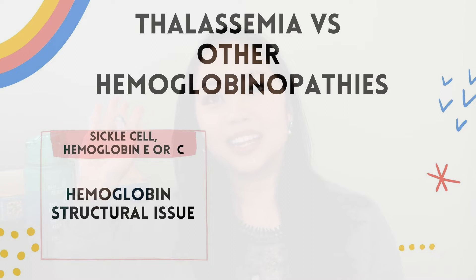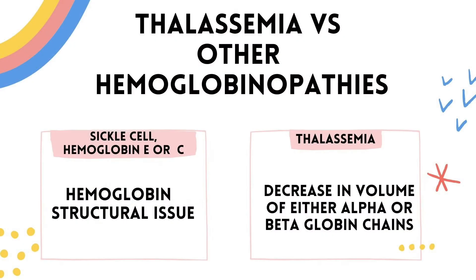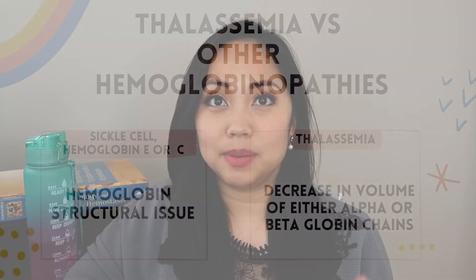The difference between thalassemia and other hemoglobinopathies such as sickle cell disease, hemoglobin C or E, is that those have a defect in the structure of their hemoglobins, whereas for thalassemia there is a decrease or absence of the globin chains. Now depending on what thalassemia you have, there are two main types: alpha thalassemia and beta thalassemia.